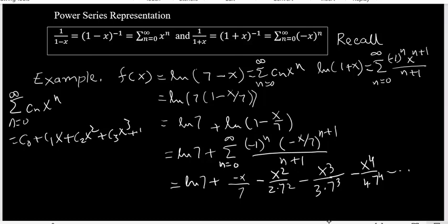So when you compare now you can easily see that c0 is natural log of 7, c1 is negative 1 over 7, and c2 is negative 1 over 2 times 7 squared, which you can write as negative 1 over 98.